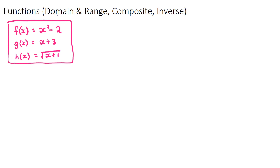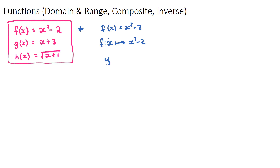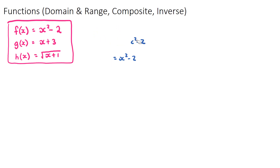In this video we're going to look at a few different types of functions — the domain and range, composite functions, and inverse functions. I've written three functions up. There are a few different ways we can write what a function looks like. f(x) = x² - 2, where f(x) means the output for input x. Another way: f: x → x² - 2, or simply y = x² - 2. All of these mean the same thing.